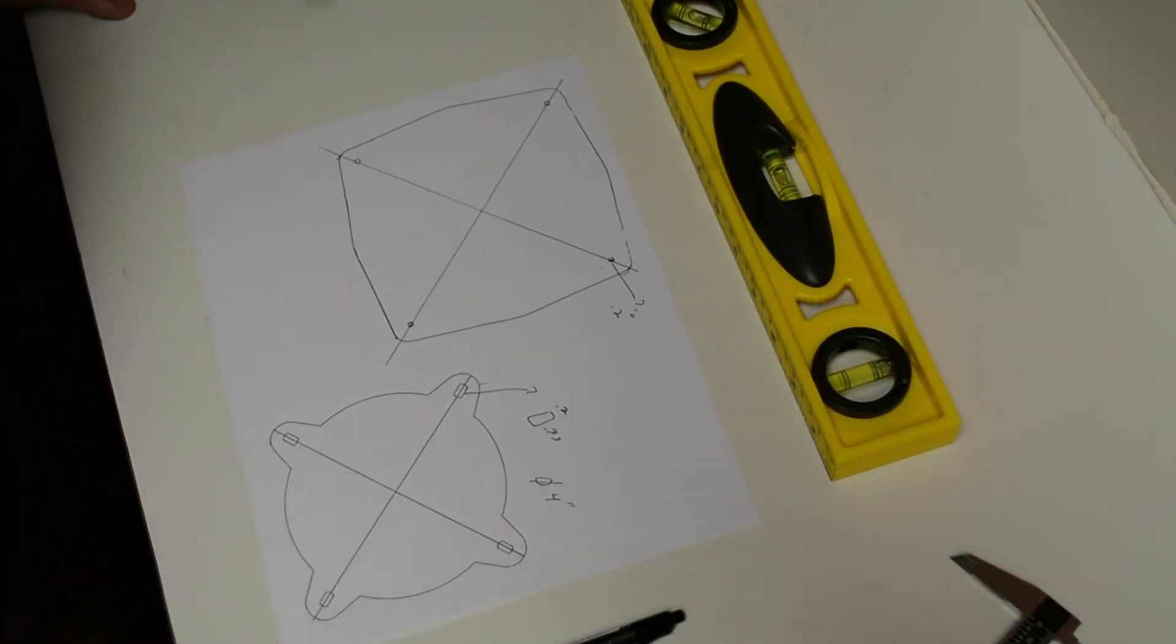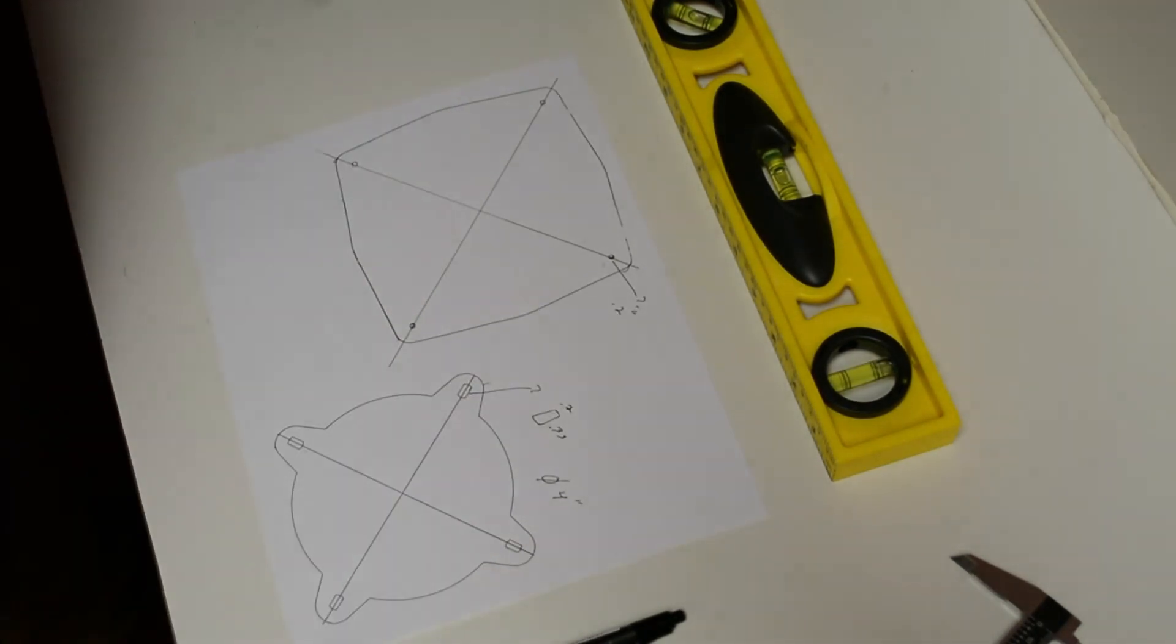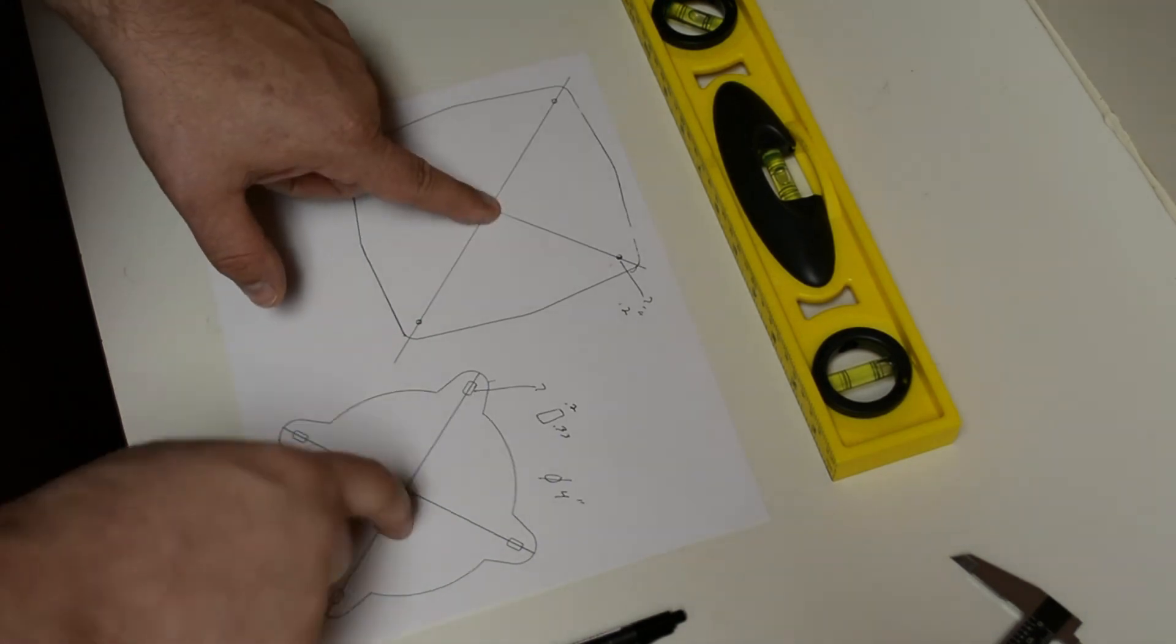So that's it. Now we have everything we need to take this piece of paper over to our scanner. We're going to scan it in. We're going to bring it into Vectric Cut2D and we're going to design this template with the hole in it.